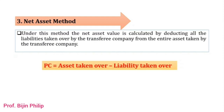In this method, you should be clear with the terms 'asset' and 'liability.' The term asset includes all assets including cash, but we do not consider fictitious assets. We will take goodwill also unless otherwise stated. The term liability includes all liabilities towards third parties — this is very important. Unlike the net payment method where payments to shareholders are considered, here liability means only liabilities towards third parties.